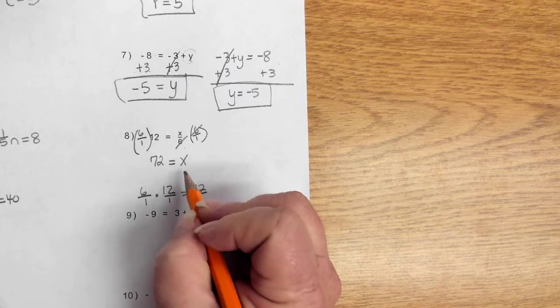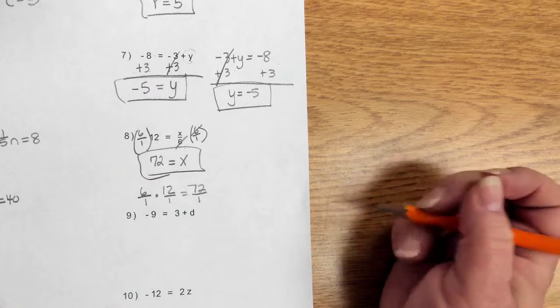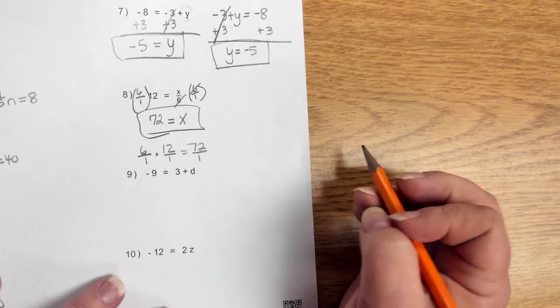When you have that fraction, just multiply by the opposite, which 1 over 6. The opposite is the whole number 6. Two more to do.